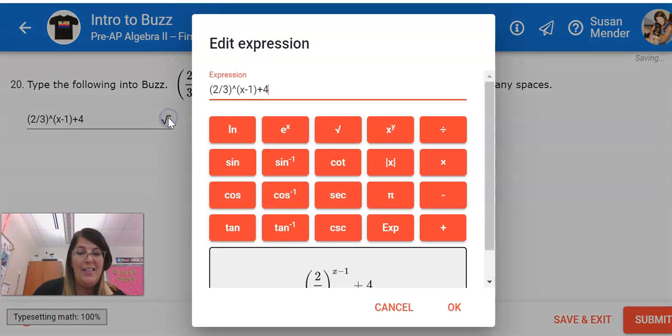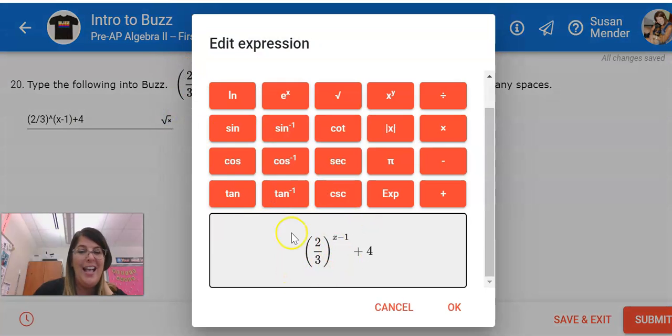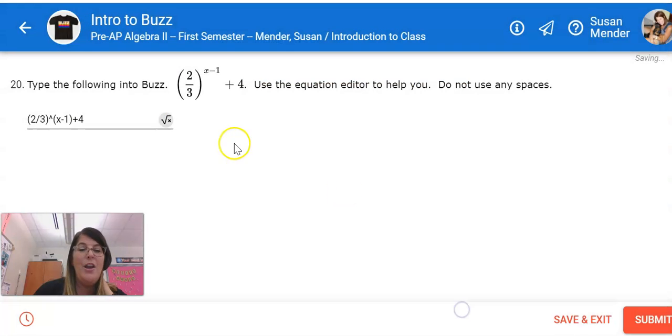Now I'm going to check that. Here we go. 2 thirds. It looks exactly the way I wanted it to. And now I know I did it correctly by checking the equation editor.